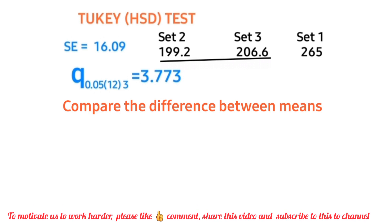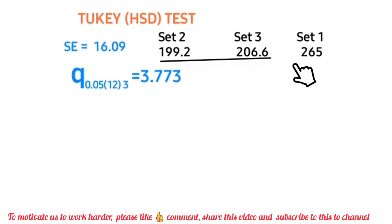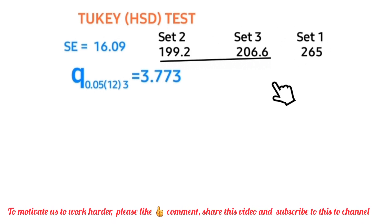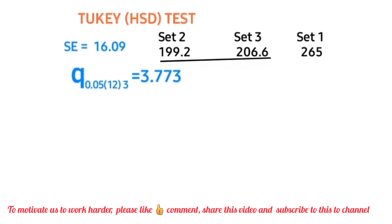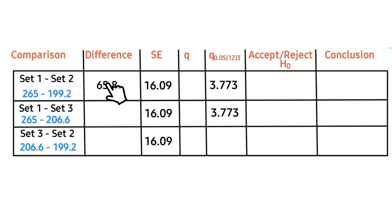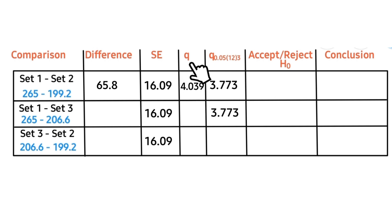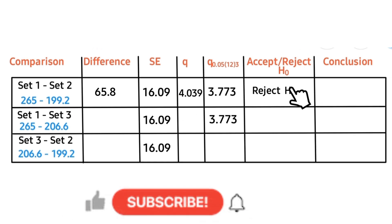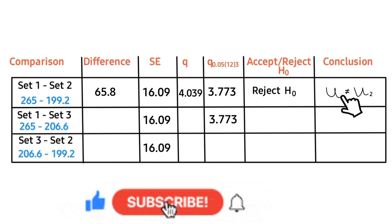Next, we compare the differences between means. Comparing Set 1 and Set 2: Set 1 value minus Set 2 value gives the mean difference, which divided by the standard error gives the calculated q value. Since this calculated q is greater than the critical q value, we reject the null hypothesis. Our conclusion is that the mean for Set 1 is not equal to the mean for Set 2.